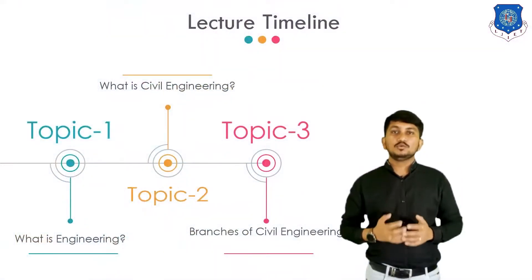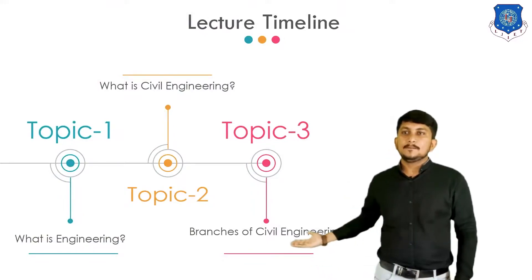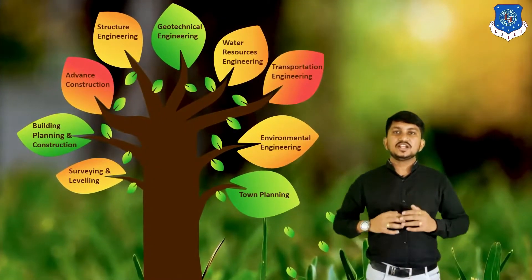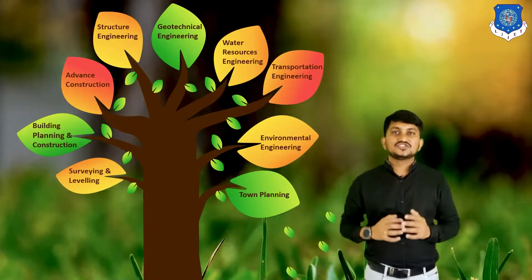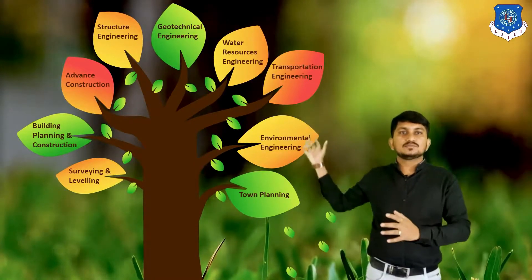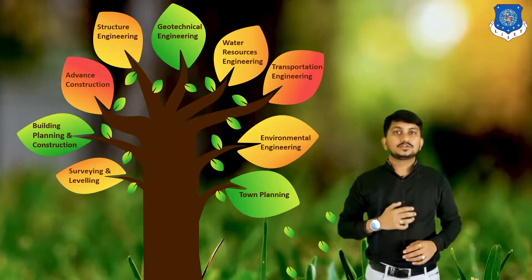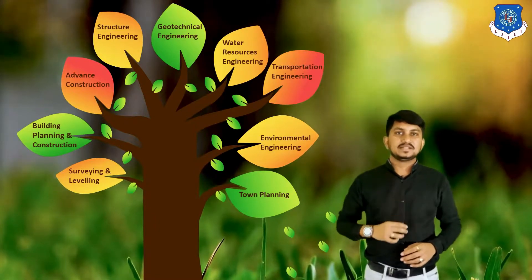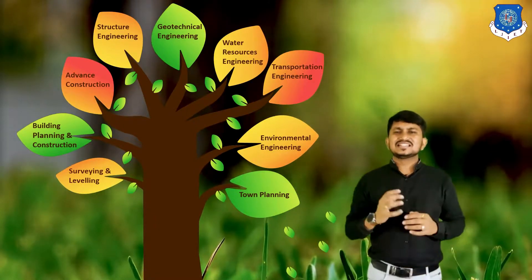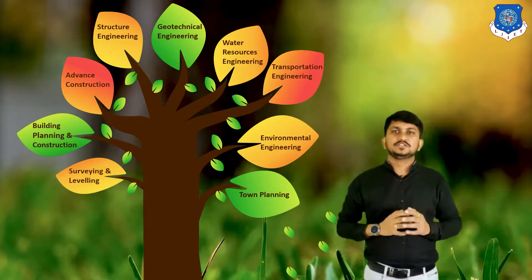Now we will move to our third topic: branches of Civil Engineering. Civil Engineering is traditionally broken into a number of smaller branches. Basically, it is divided into 9 branches as you can see on the screen. Let's discuss all branches one by one.